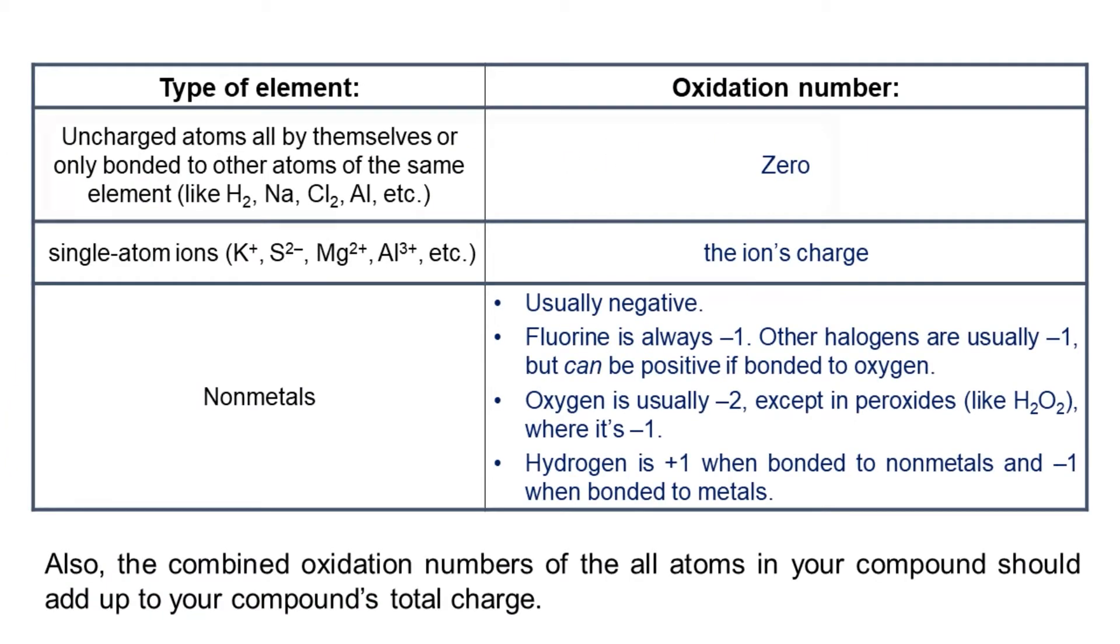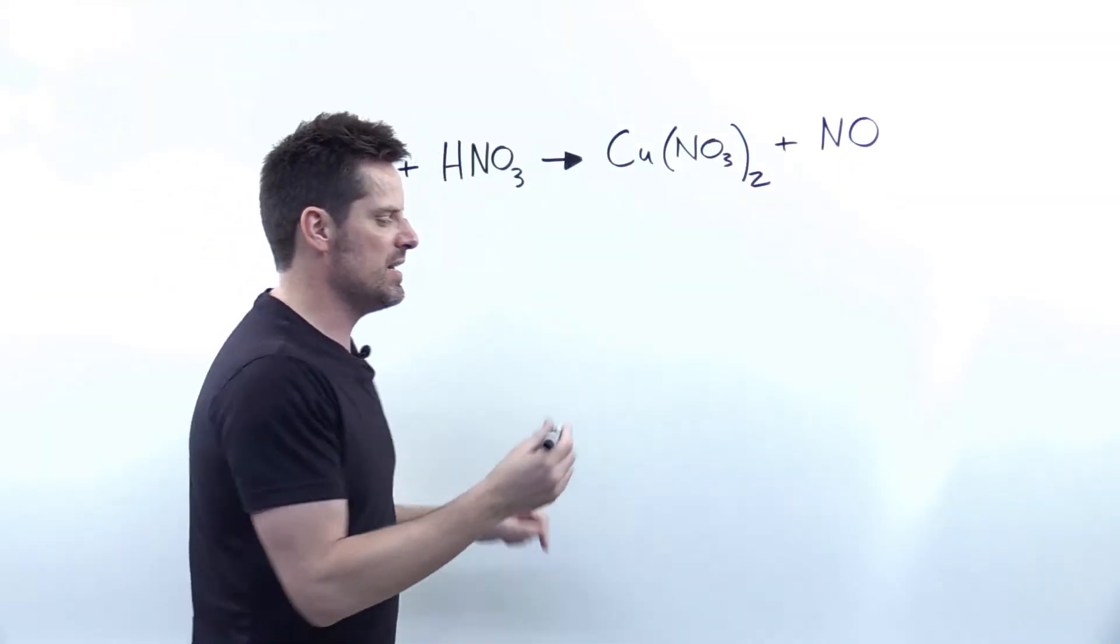In contrast, anytime you have oxygen, if it's oxygen all by itself with zero charge, as in molecular O2, its oxidation number is also zero. If it's oxygen in peroxides, such as hydrogen peroxide H2O2, its number is negative one, and everywhere else, oxygen is negative two, and that will apply to the oxygen over here in nitrogen monoxide.